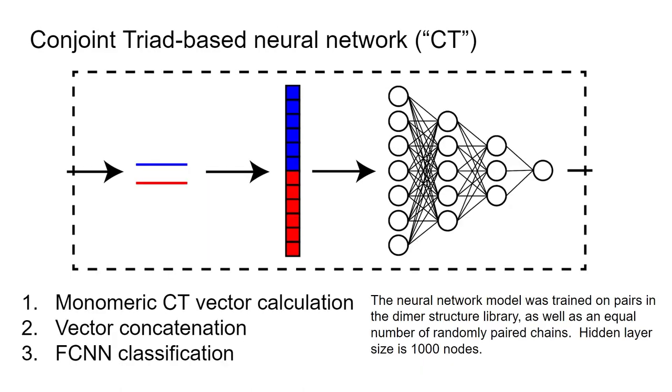As a rescue pipeline, we have the conjoint triad classifier. It takes input sequences, transforms them into fixed-length vectors using the conjoint triad method, then feeds the vector into a machine learning classifier—a simple neural network model. This gives classification if not identified in other databases.